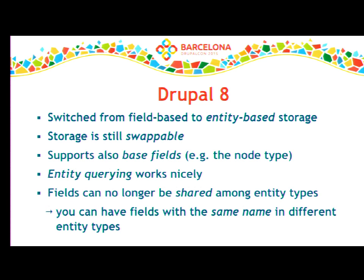In D8 the situation changed quite a lot. We switched from field-based storage to entity-based storage, which means all fields on an entity type share the same storage, and the whole storage is swappable — the whole entity can be stored in a storage backend, and that backend can change. Base fields are also supported, which means node title is stored along with regular fields like field_body. You can swap the entire storage of the entity and store an entire node into MongoStorage, for instance. This makes entity query way easier because we have a single storage backend to target.